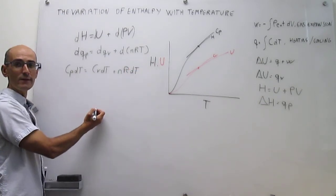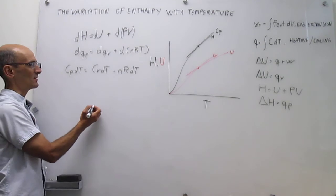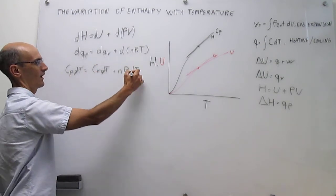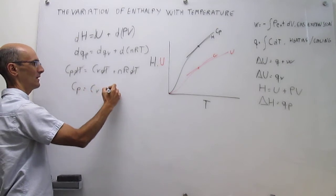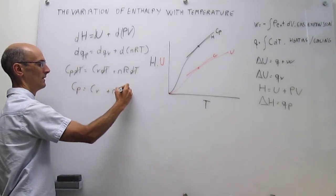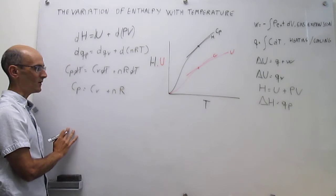Notice that everything is multiplied by differential of T, so you can cancel it out, and you get to an expression that gives you the relationship between the heat capacities at constant pressure and constant volume.